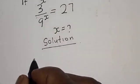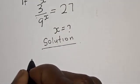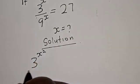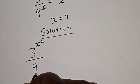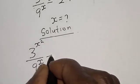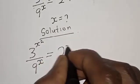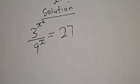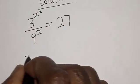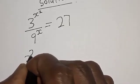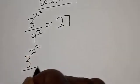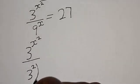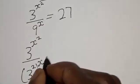We have the equation: 3 raised to power s squared divided by 9 raised to power s is equal to 27. This is the same thing as 3 raised to power s squared divided by 3 squared raised to power s.